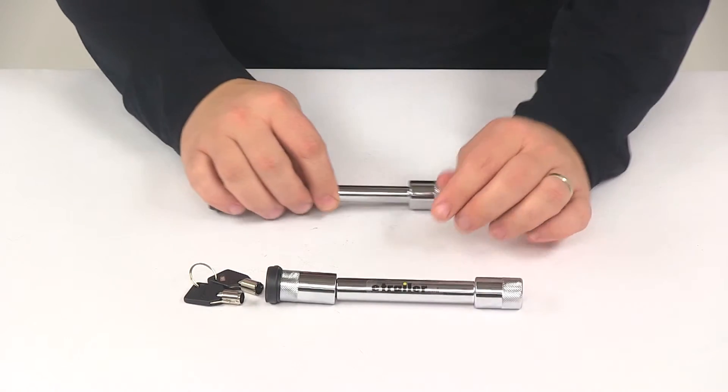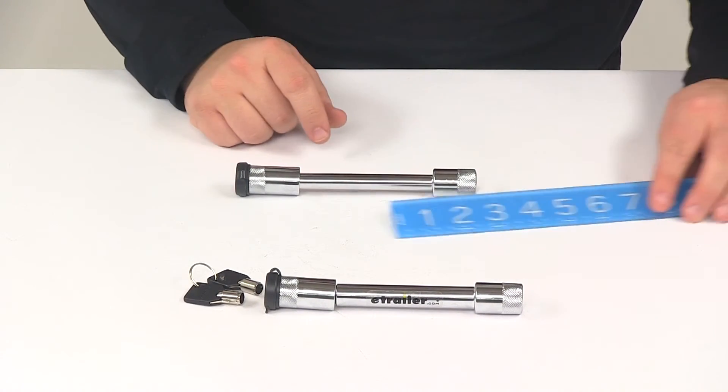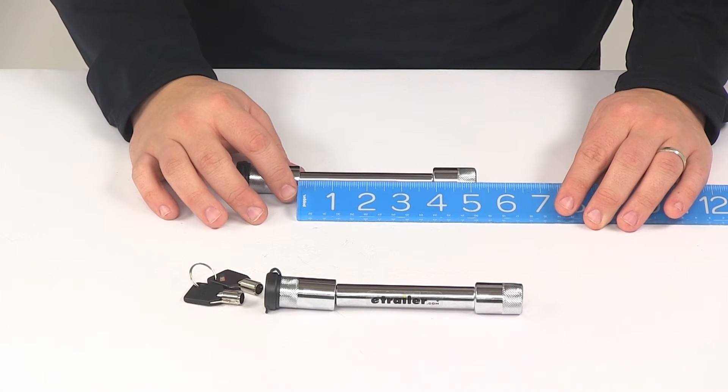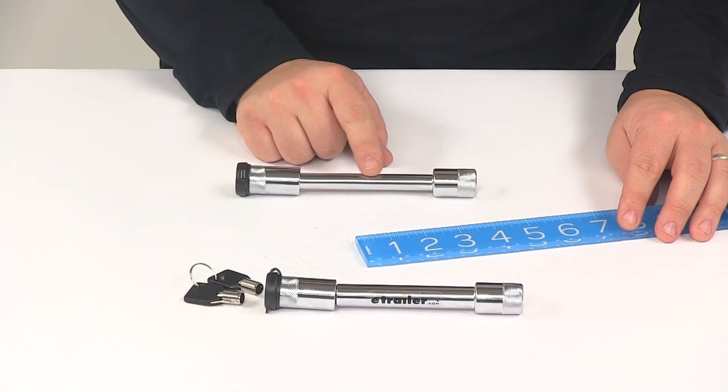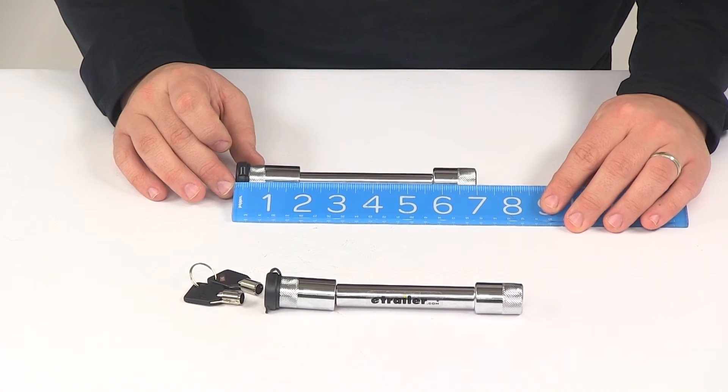When it comes to the locking adjustment pin, inside edge to inside edge, so the usable pin length is three and seven-eighths of an inch. That diameter is a half inch and then the overall length of that unit is going to be seven inches.